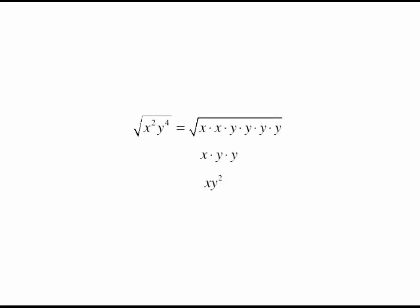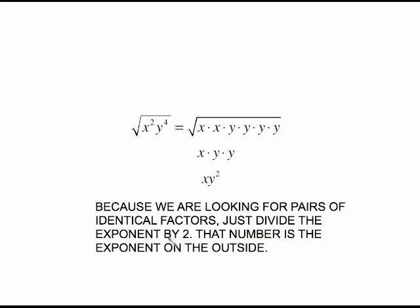Multiplying that up we get x times y squared. You might notice that with even powers there's a very easy shortcut. For x squared, there's a pair of x's — divide the exponent 2 by 2 to get x to the first. Divide the exponent 4 by 2 to get y squared. We divide by 2 because we're pairing things up and it takes two to make a pair. The rule is: divide the exponent by 2, and that becomes the exponent on the outside.